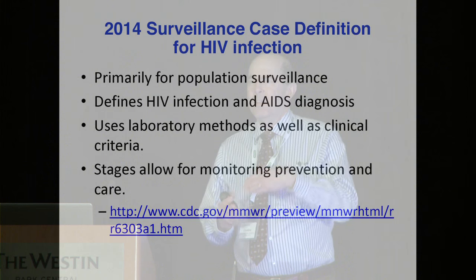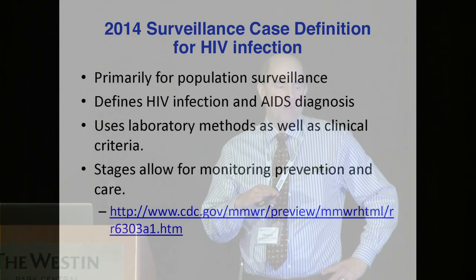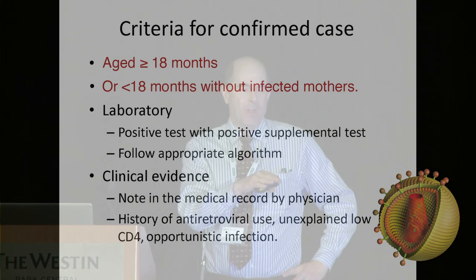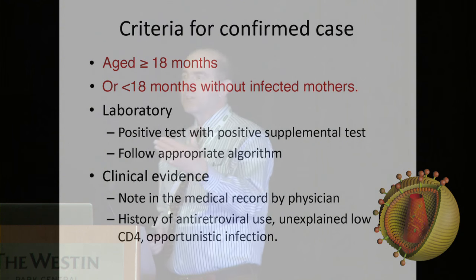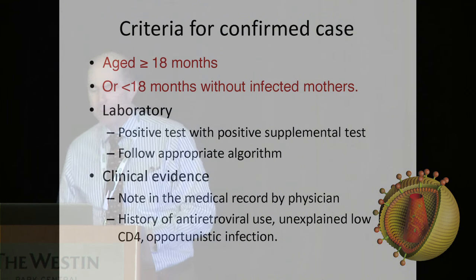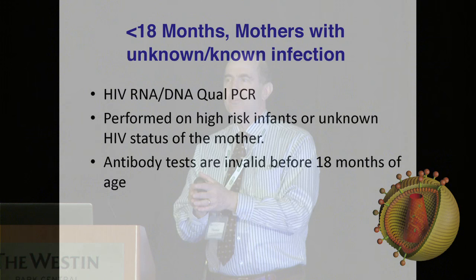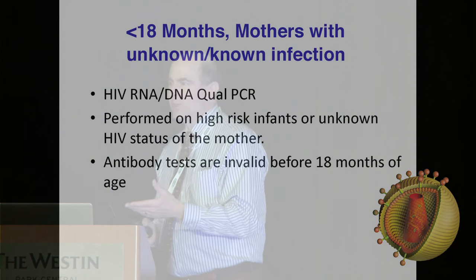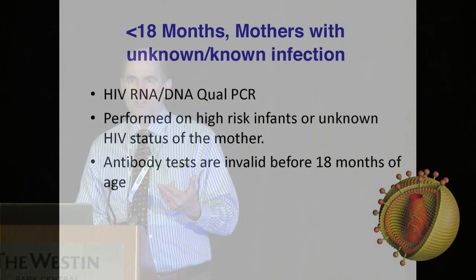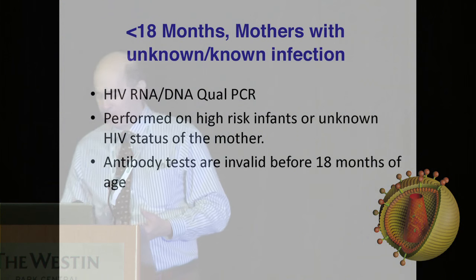AIDS is a stage of HIV infection, and the CDC has guidelines for diagnosis and classification. Criteria for a confirmed case include both laboratory and clinical evidence — specifically, a positive screening test with a supplemental test, making it a two-test algorithm. For newborns, antibody tests are unreliable because maternal IgG crosses the placenta, so molecular tests are needed for neonatal HIV diagnosis.